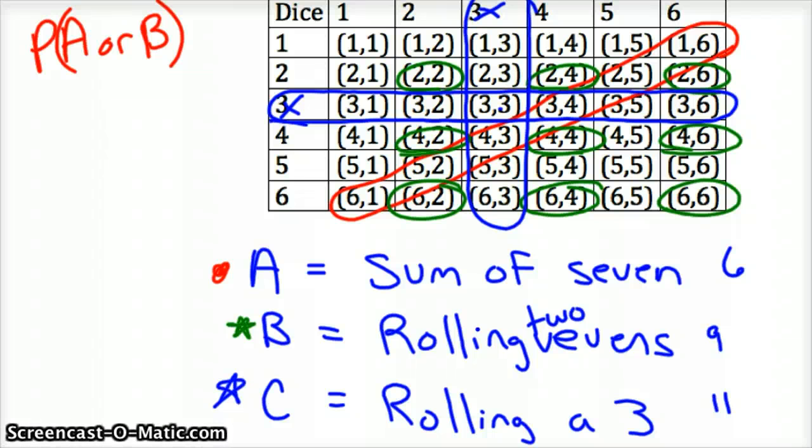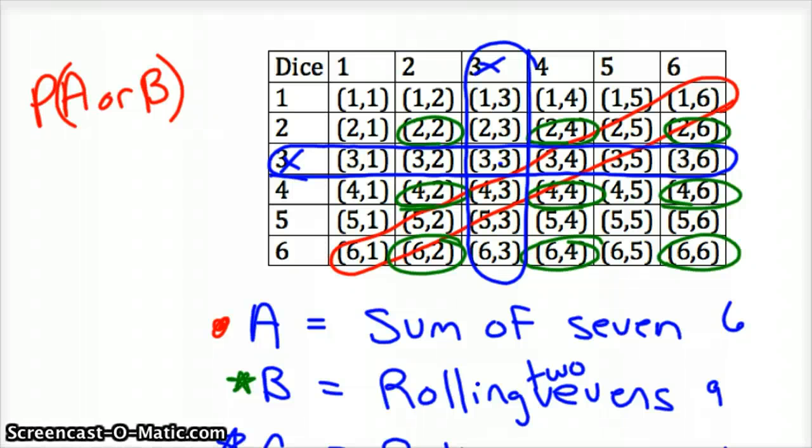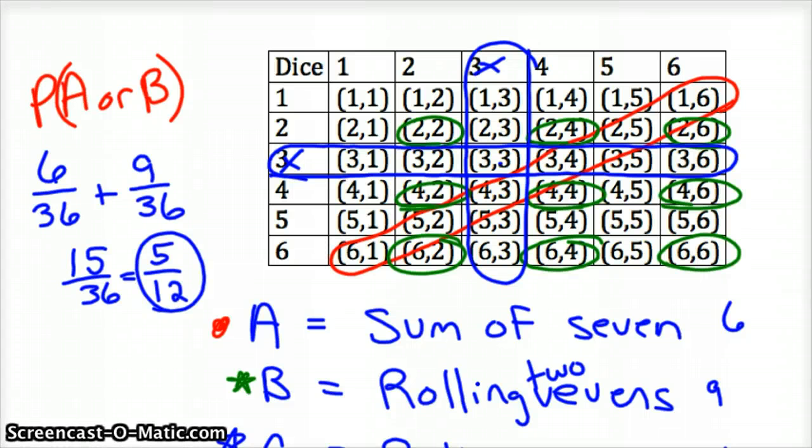So if we want to go back up here to A or B, those are mutually exclusive. A sum of seven, every one of those has an odd number. And so those are mutually exclusive. So we can just add them. So it would be six out of 36 for the sum of seven plus nine out of 36 for having two even numbers. And so you add that together and you've got 15 over 36. This is the probability there. And that would reduce, you can take a three out and that'd be five out of 12. So that's your probability of rolling a sum of seven or rolling two evens.